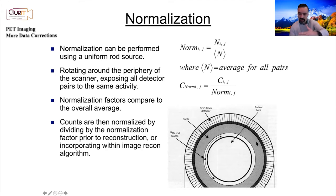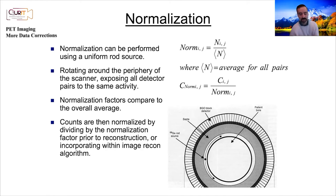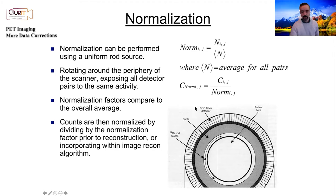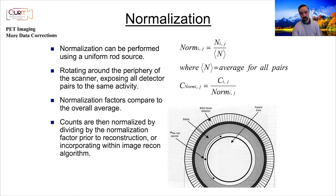By doing this measurement, ideally everything should be uniform but it's not — the crystals vary, and sensitivity changes with angle of entry. It used to be a very long acquisition where you look at all possible lines of response and count how many counts you're measuring. You calculate the normalization for all detector pairs, then when you do an actual PET scan you can correct for each line of response, similar to attenuation correction.